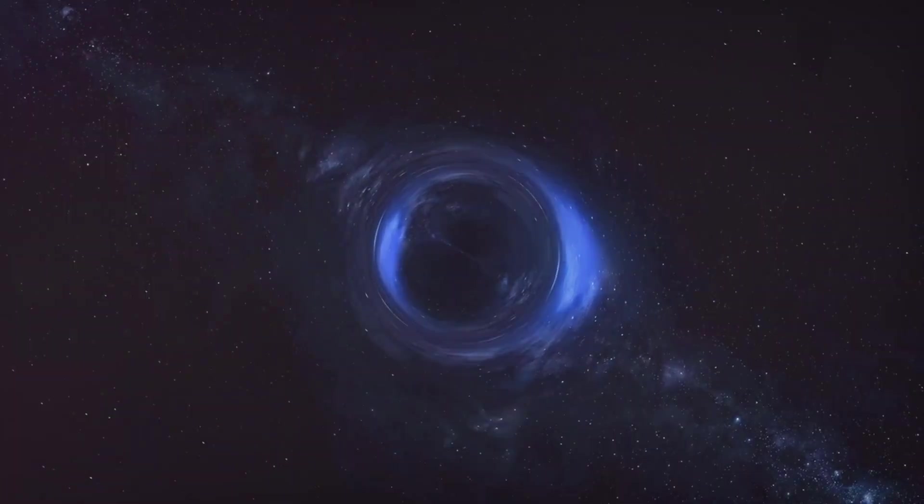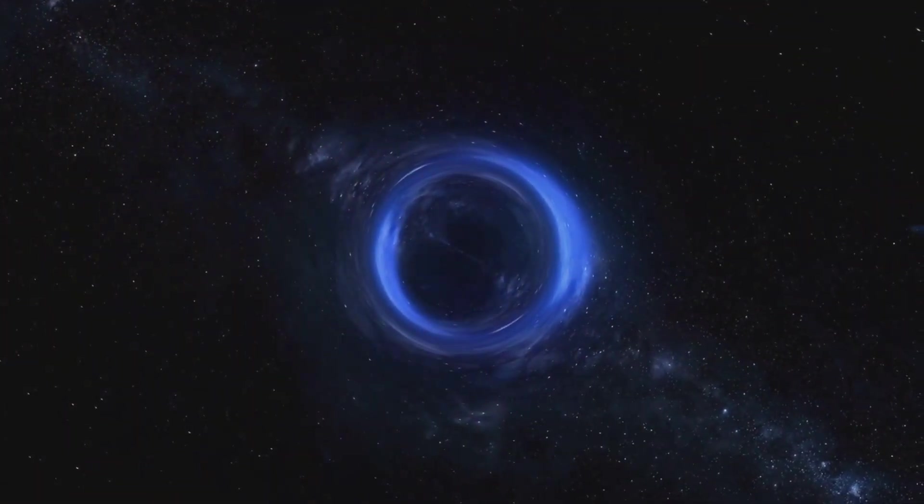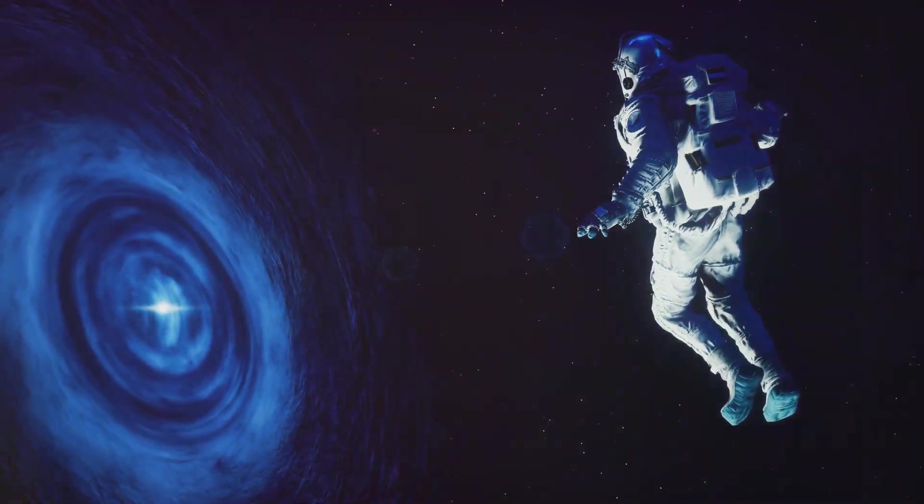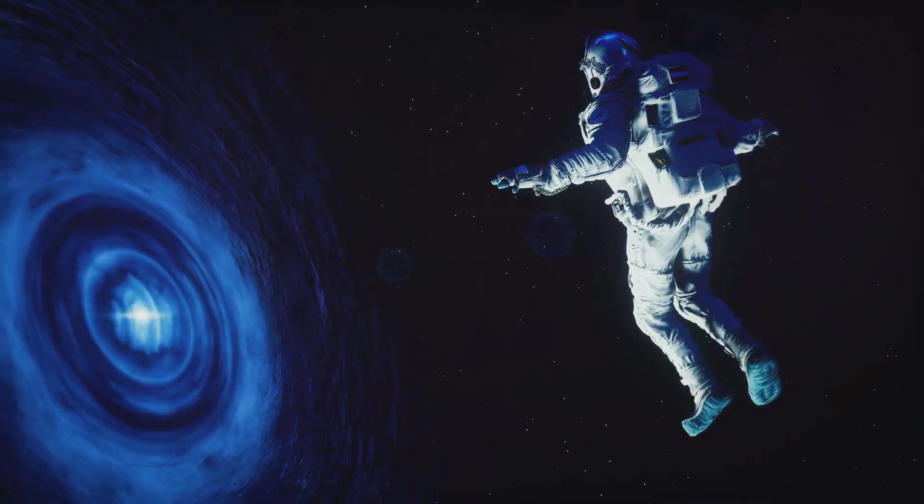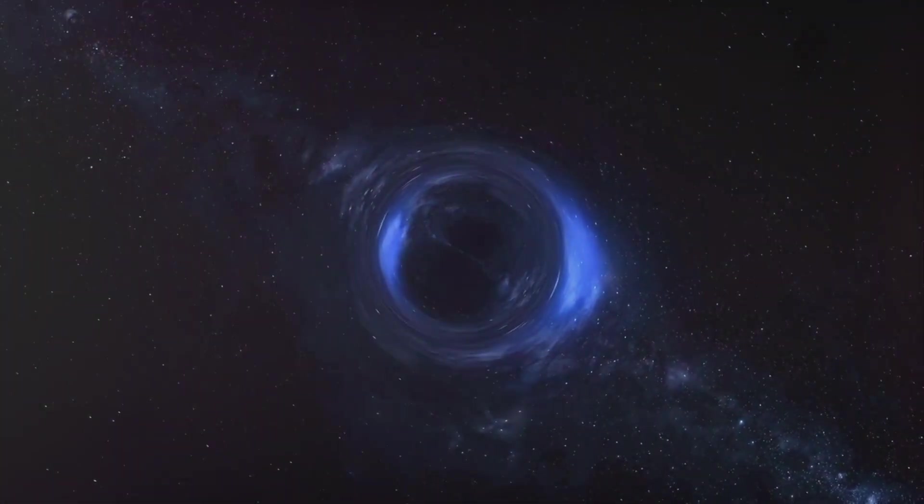Now, should this happen near the event horizon of a black hole, one of these particles might fall in before they can annihilate each other. The other particle, having lost its partner, escapes into the universe as radiation. This process is known as Hawking radiation.